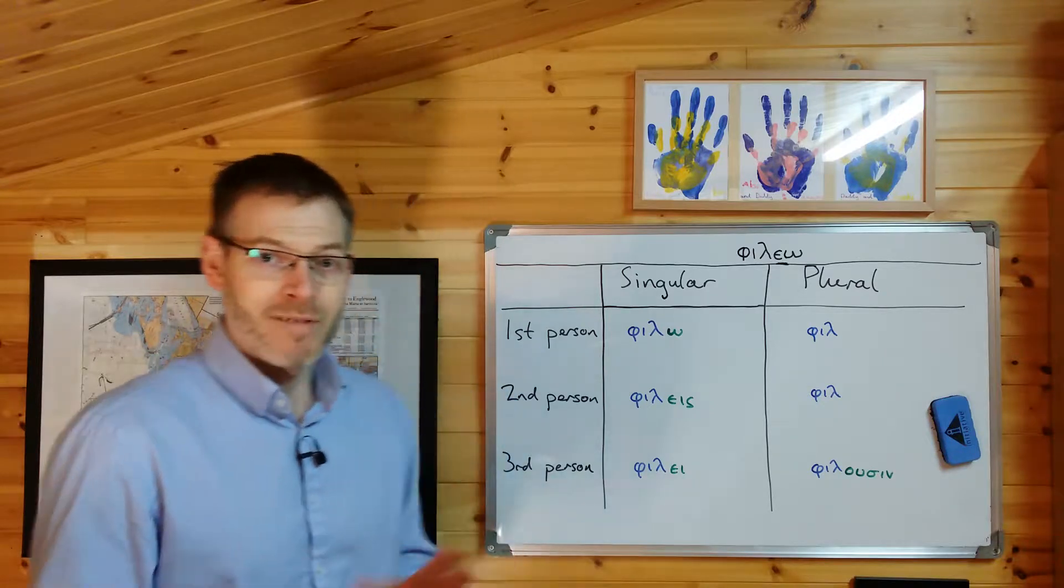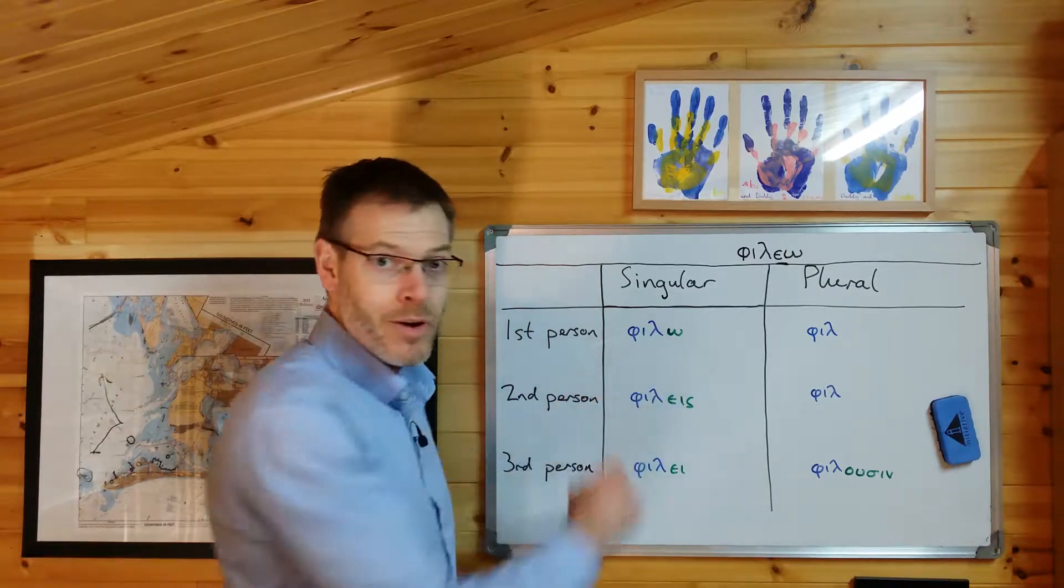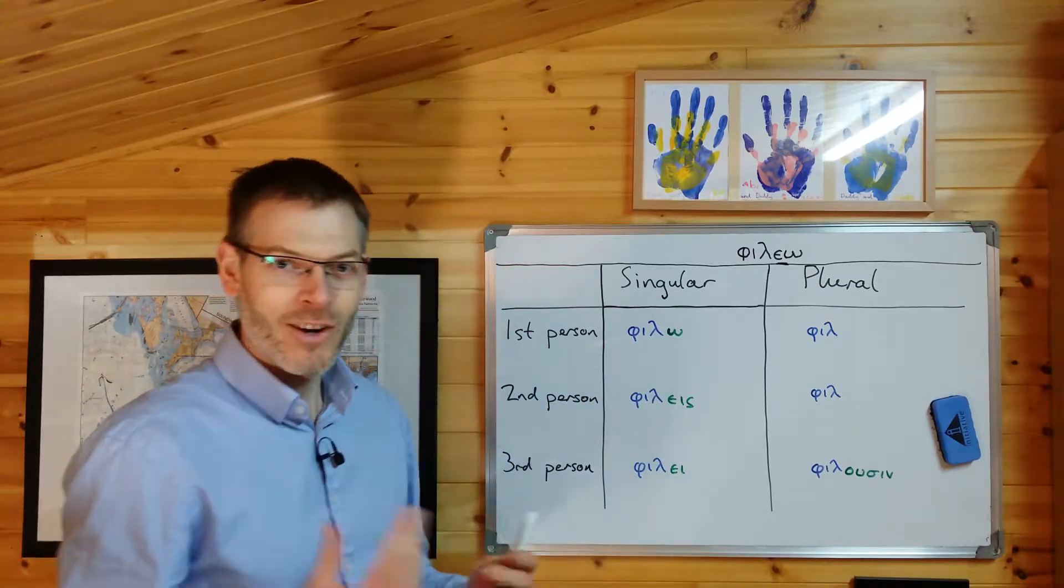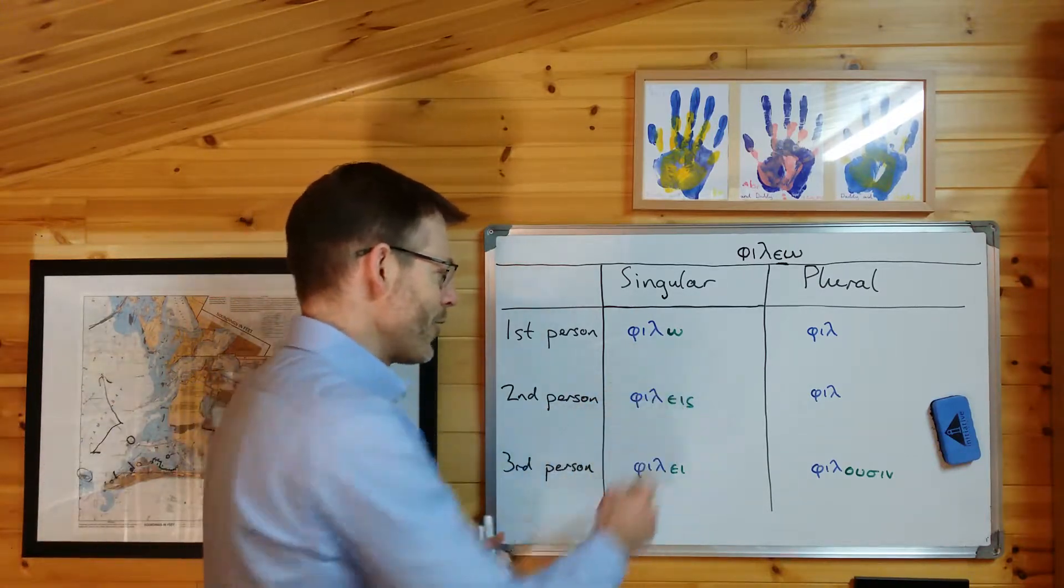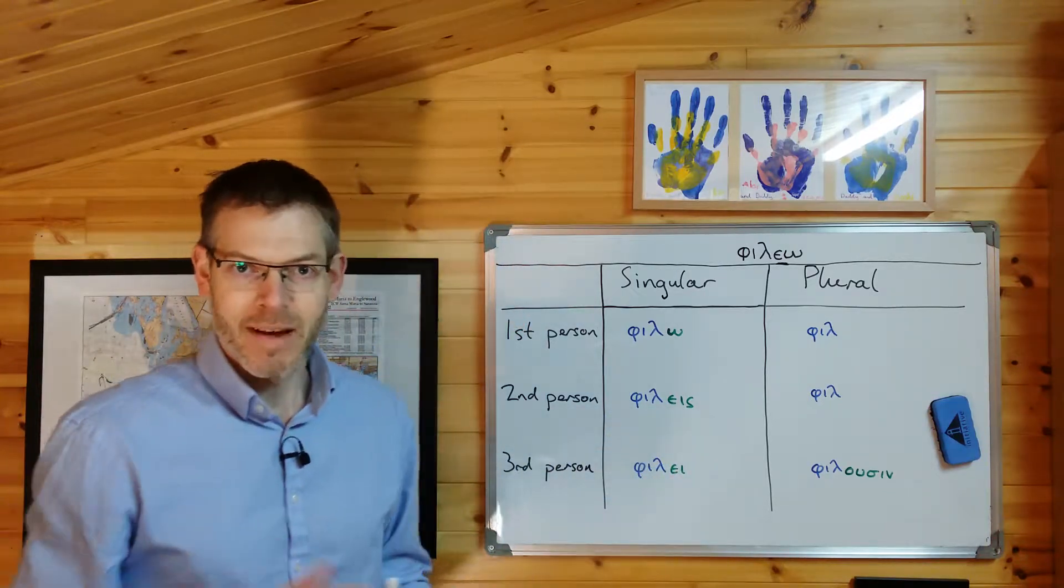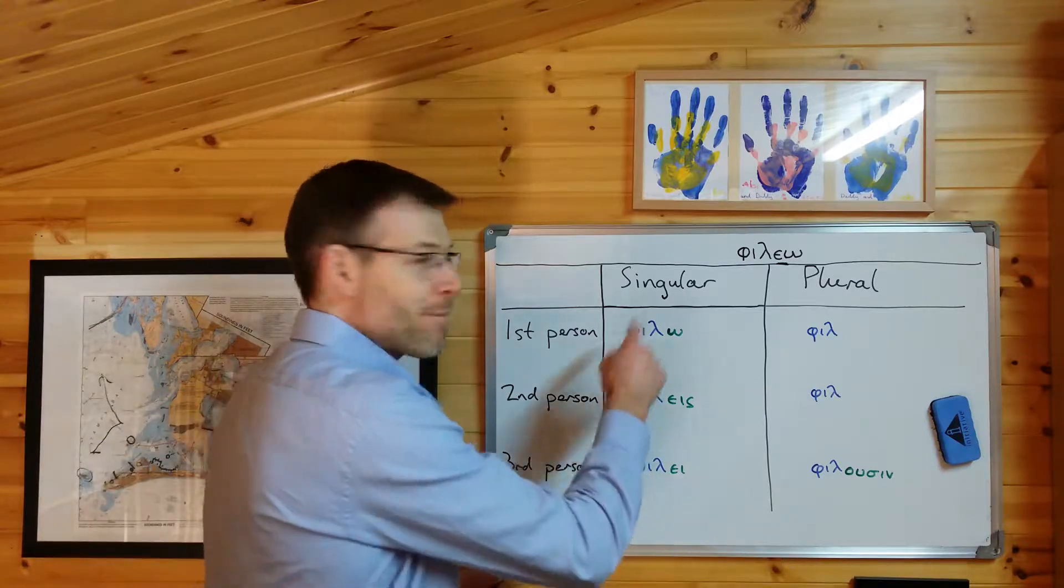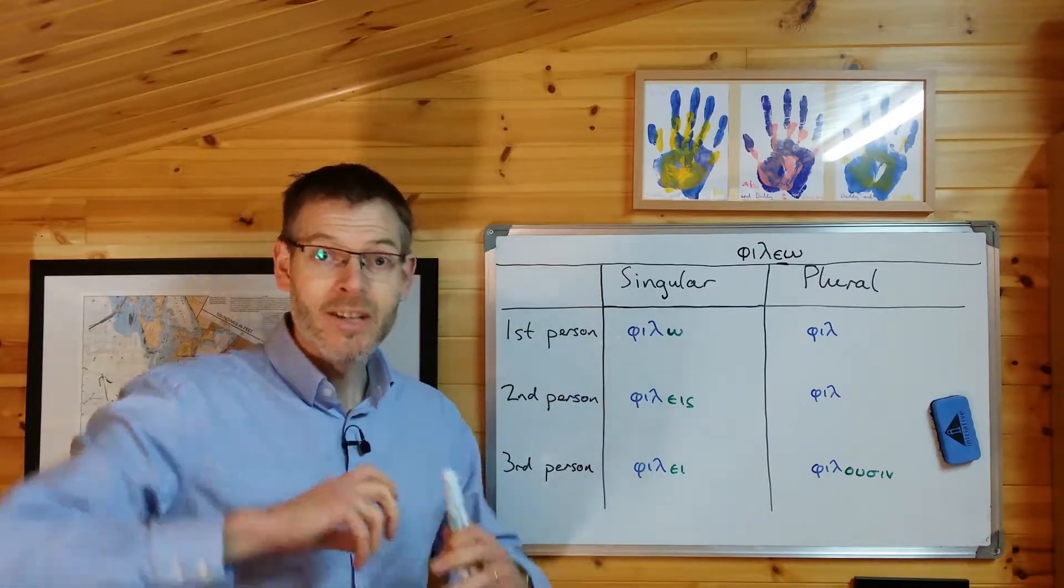Now, sometimes that doesn't make any difference. Because if it's followed by a long vowel like ω, it's happy already. The long vowel can just stay as ω. Or if it's followed by a diphthong like αι, then it doesn't make any difference. The αι ending can stay there. And the epsilon, being weak, just disappears.